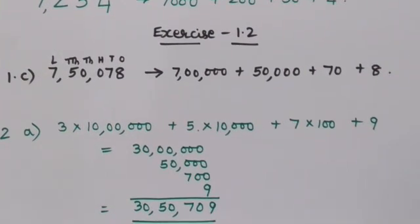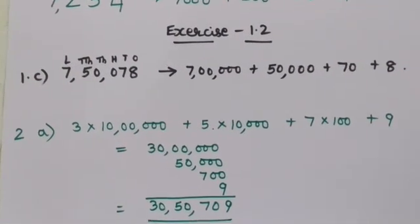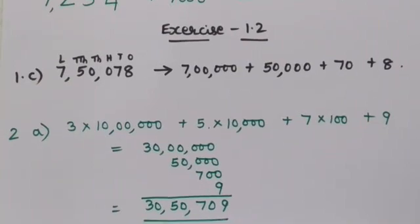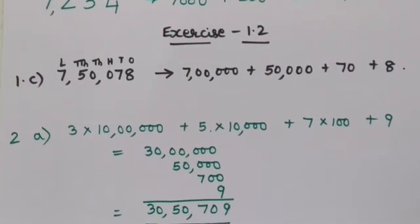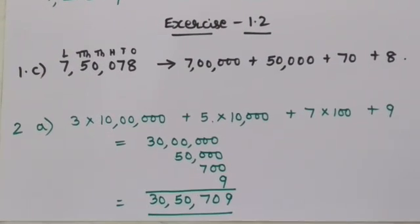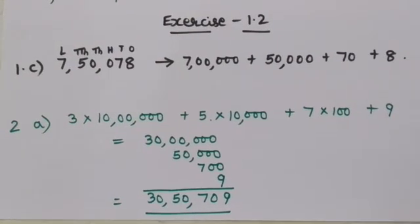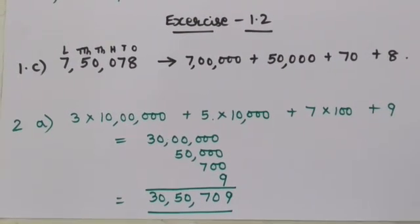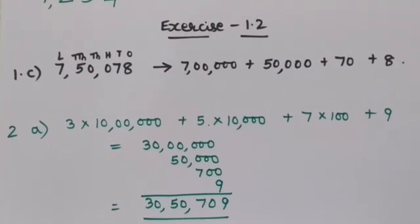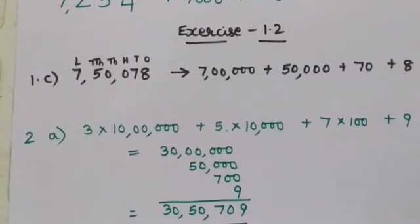How do we write it in expanded notation? For easy understanding, write the places on top of the numeral. Then it will make your work easier. That is, 7 lakhs plus 50,000 plus 70 plus 8.